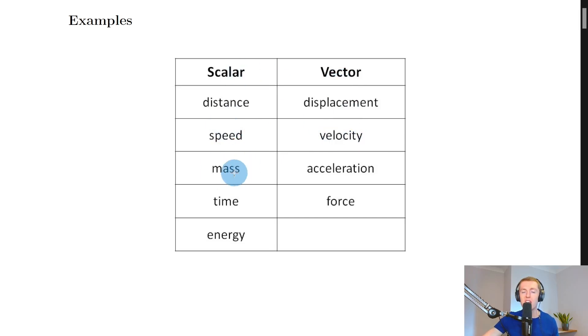We then have mass, which is a scalar, because when we talk about masses, we don't give a particular direction, because that wouldn't make sense. And then we have acceleration, which is a vector quantity. So when we're talking about objects accelerating, it's useful to know which direction they're going to move in. So that's why accelerations have both a magnitude and a direction.